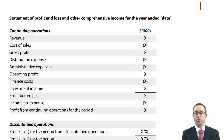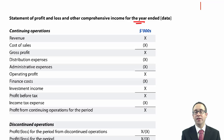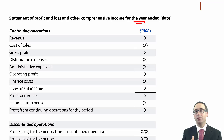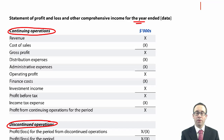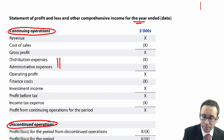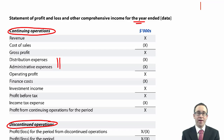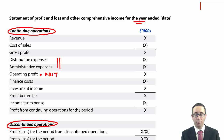Moving to the statement of profit or loss and other comprehensive income — remember that is a story for 12 months, telling you the story for the year ended on the same date as the statement of financial position. Touching on IFRS 5, we split the statement of profit or loss into continuing and discontinued operations. Within continuing operations you have revenue, cost of sales, distribution, admin — sometimes combined as other expenses — before getting to operating profit or PBIT, then finance costs, investment income, PBT, income tax, and profit from continuing operations.